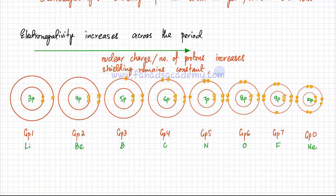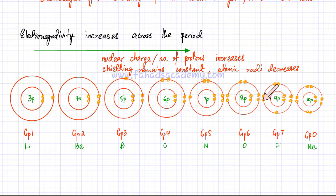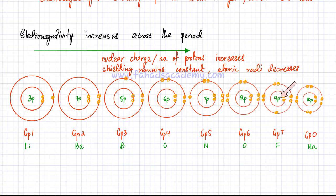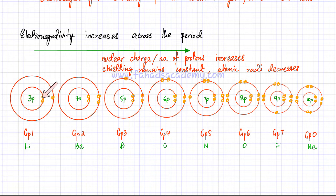The atomic radius decreases as you move across the period. Why is it decreasing? Because if you have nine protons, the force of attraction for the electrons is going to be very strong. So those nine electrons would be attracted very strongly, which is why the size of the fluorine atom would be smaller — the electrons are held tightly close to the nucleus. In the case of lithium, it only has three protons, so the electrons would be far away because the force of attraction is not very strong.